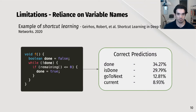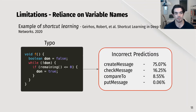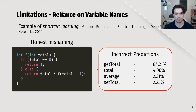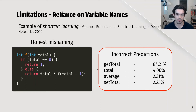Here are some examples — you can try these on their website. The first is a method looping until something is done; the model correctly predicts 'done' or 'is done' as the method name. However, if we commit a typo from 'done' to 'don', the predictions become wildly incorrect and in fact more confident in their incorrectness. Another example with factorial: the model correctly predicts the method name, but when we change 'n' to 'total' the predictions change drastically and are again more confident in their incorrectness.